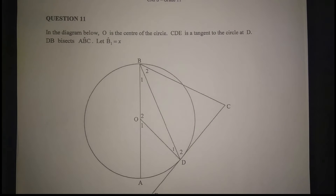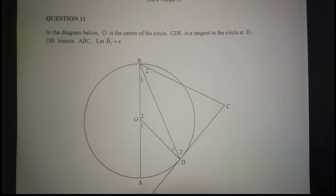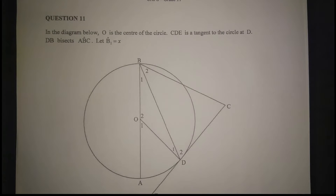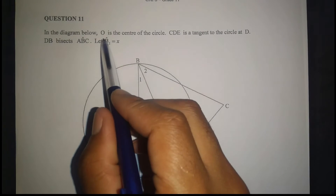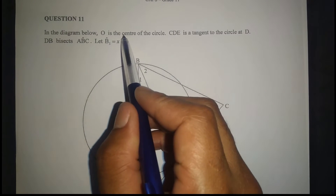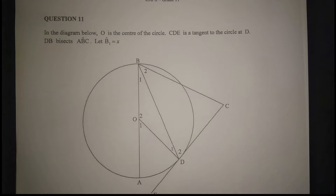In any Euclidean geometry problem, the main idea is to check your keywords. Center is a keyword. Theorems 1 and 2 involve the center.